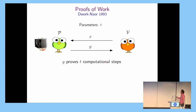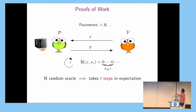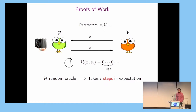Proofs of work are very famous these days. A very simple instantiation: if you have a random oracle, you keep repeatedly looking for a salt until the hash starts with enough zeros. This kind of construction is very simple, but it's highly parallelizable — you could do this step entirely in parallel.